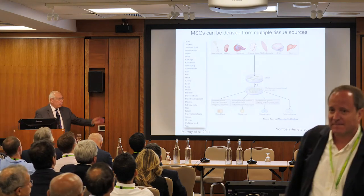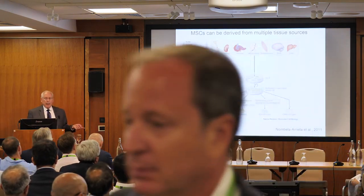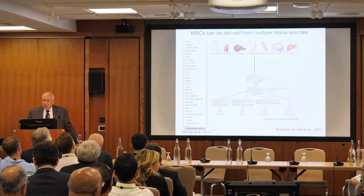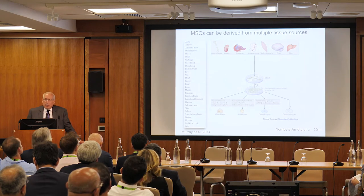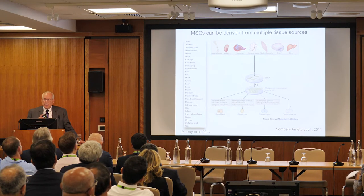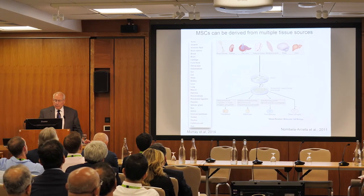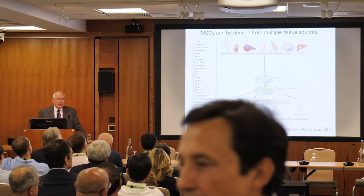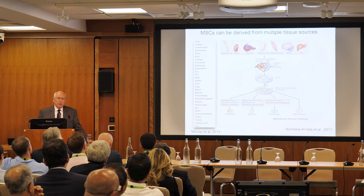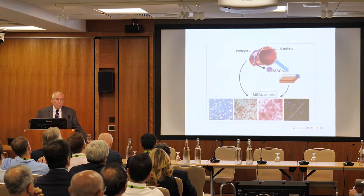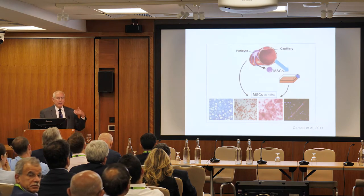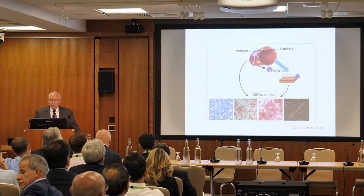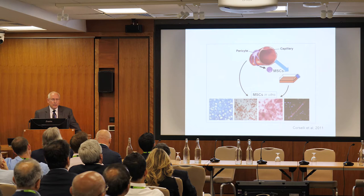Every single tissue of your body has more or less been published as a source for MSCs — skin, liver, kidney, whatever tissue you name. MSCs have been isolated from them and in vitro been pushed to become osteoblasts, fat, or cartilage. What's missing from this diagram is the fact that every one of those tissues had blood vessels. We now know how to — whether mechanically or with enzymes — kick those perivascular cells off the blood vessels, put them in culture, and make them do all these dances in vitro.